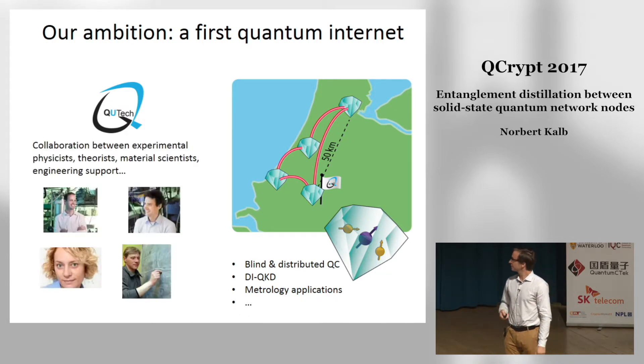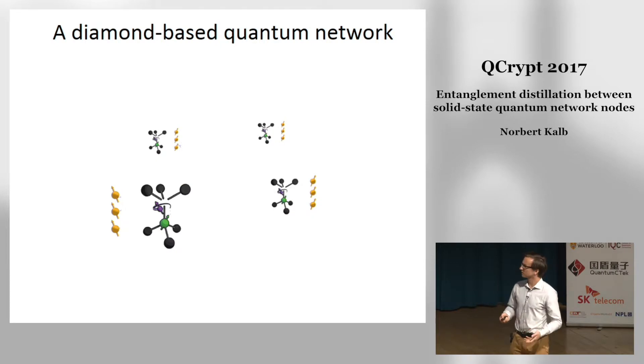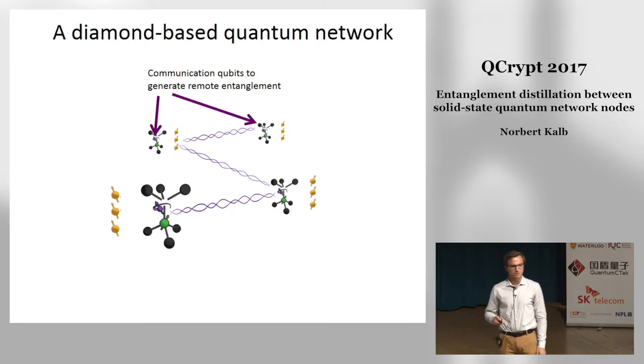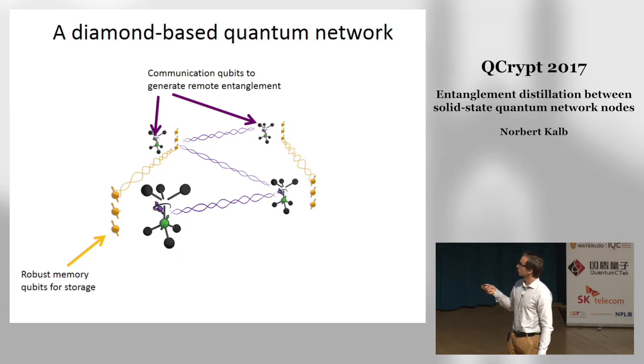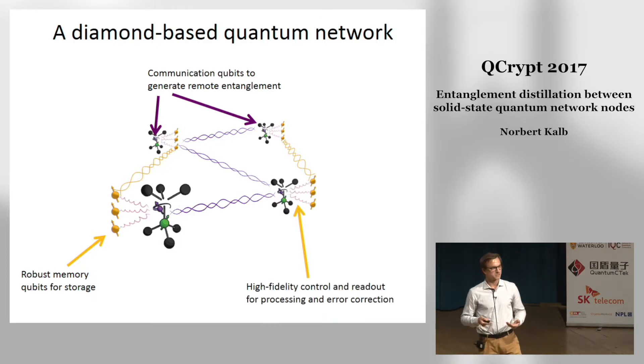To achieve this we run a collaborative effort between experimentalists, theorists, material scientists and engineers. On a more conceptual level, we need communication qubits that send photons from one node to another and establish entangled states, but we also want to run more complex protocols, requiring memory registers to store more entangled states, and some form of interface between our communication qubit and our memories.